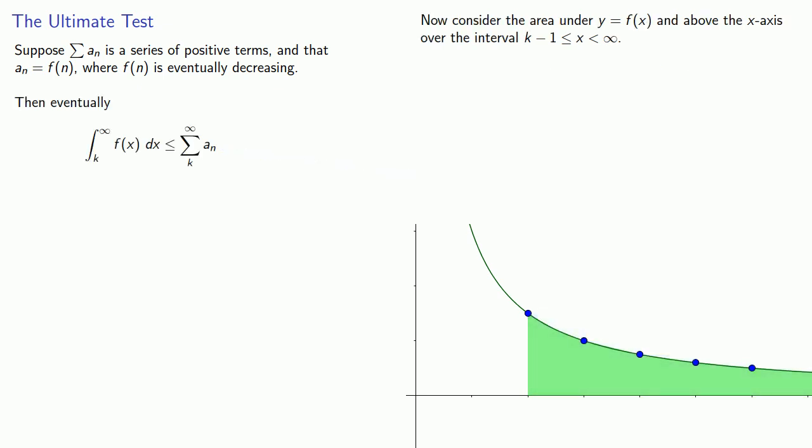Now consider the area under y equals f of x and above the x-axis over the interval from k minus 1 to infinity. In other words, we're going to extend that region back a little bit towards the y-axis. Now suppose we take the right rectangles of width 1. The area of each rectangle is fn times 1, or an.